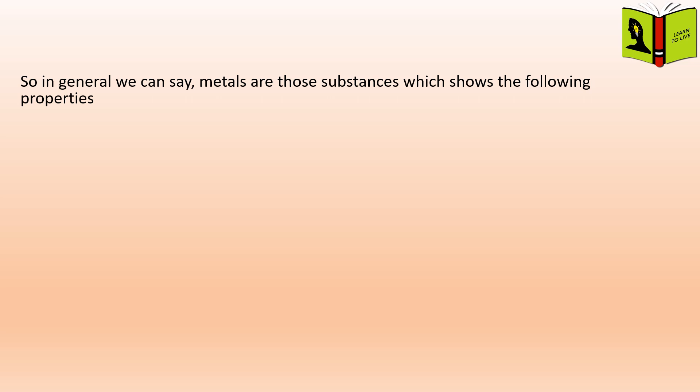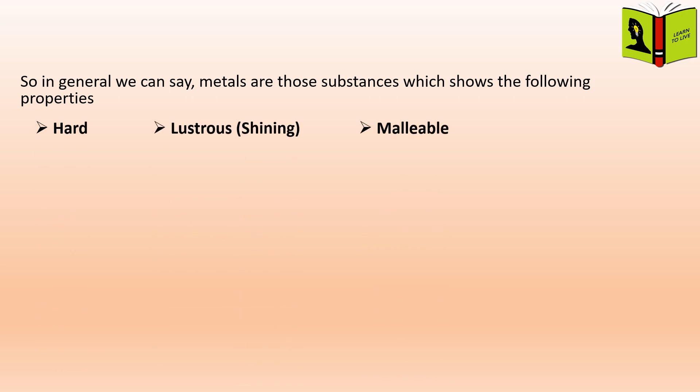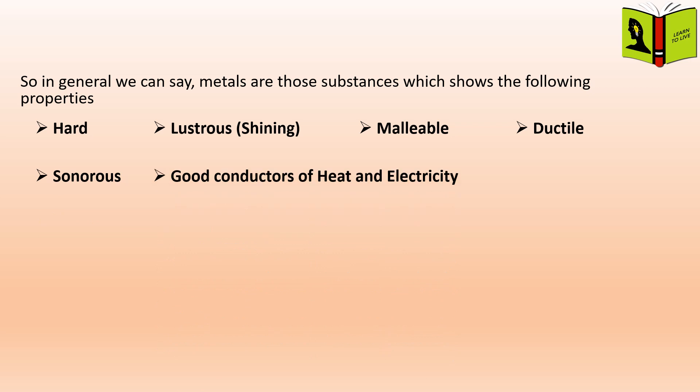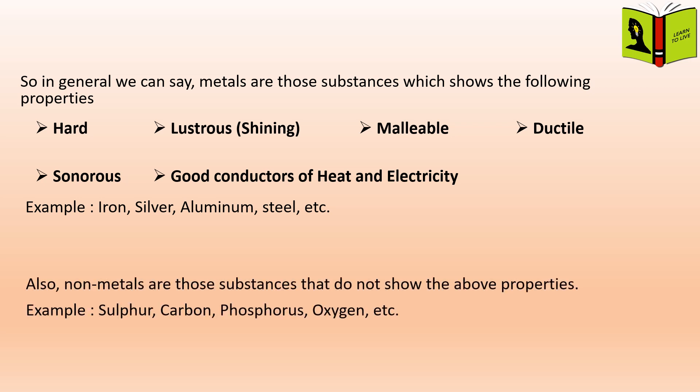So in general, we can say metals are those substances which show the following properties: hard, lustrous, malleable, ductile, sonorous, and good conductors of heat and electricity. Examples of metals are iron, silver, aluminum, steel, etc. Also, non-metals are those substances that do not show the above properties. Examples are sulphur, carbon, phosphorus, oxygen, etc.